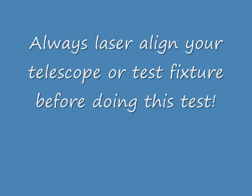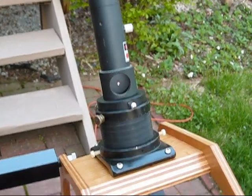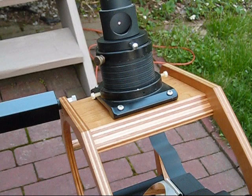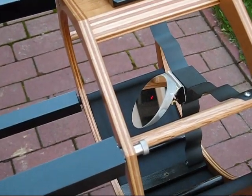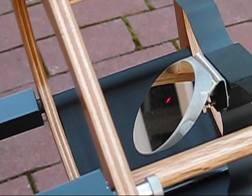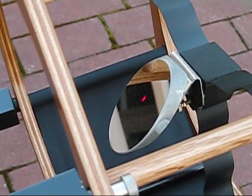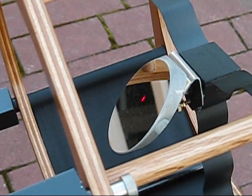You need to have the telescope properly laser collimated before running the test. So, here's how you should do it. Okay, so I've got my laser turned on. Stuck into my focuser. And, we want to be sure that the laser dot hits in the middle of the secondary in the right spot. So, it's a little bit off center because of the offset.